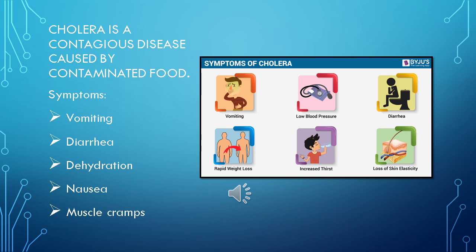Cholera is a contagious disease caused by contaminated food. Some symptoms are vomiting, diarrhea, dehydration, nausea, and muscle cramps.